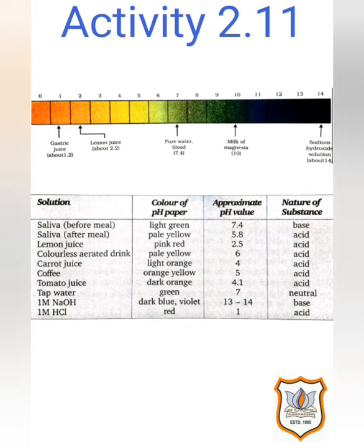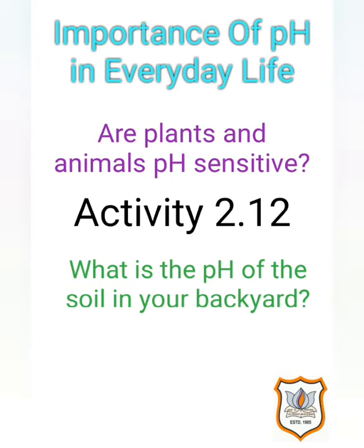A small amount of HCl: the color will be red and the pH value will be 1 — it is a strong acid. Now, how is this pH value important in our day-to-day life? Are plants and animals pH sensitive? Yes, of course. Our body works within the pH range of 7 to 7.8.